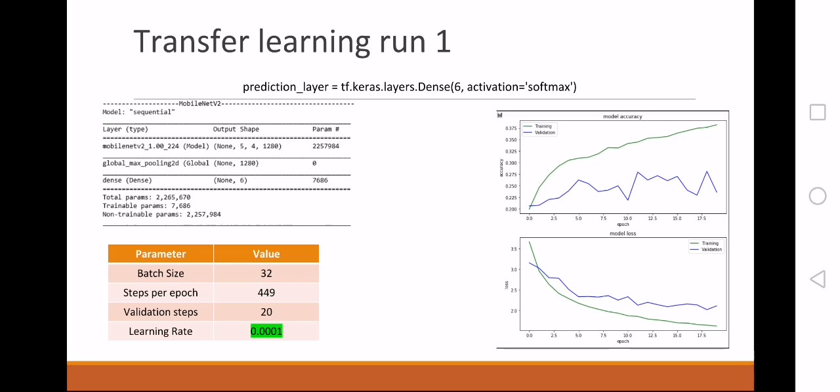You can see here that the first learning rate that we use is 0.0001. You can see that the accuracy in the training is starting to go up, but the validation accuracy is behaving really strange.